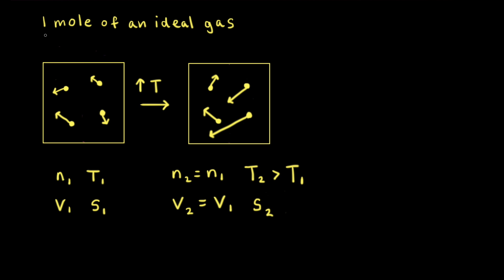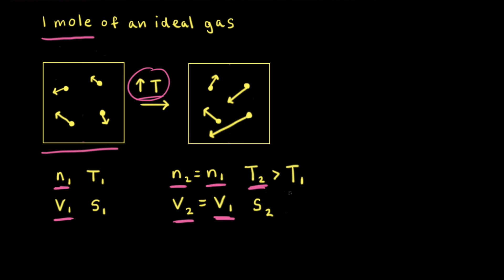For our next situation, we're starting once again with one mole of an ideal gas. However, this time the volume will be held constant and the temperature will be increased. So the final number of moles N2 is equal to the initial number N1, which is one mole, and the final volume V2 is equal to the initial volume V1. Since we are increasing the temperature, the final temperature T2 is greater than the initial temperature T1.